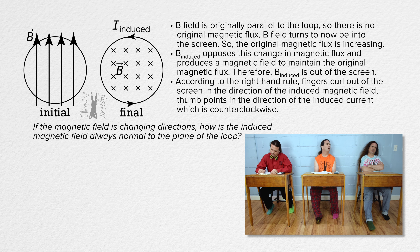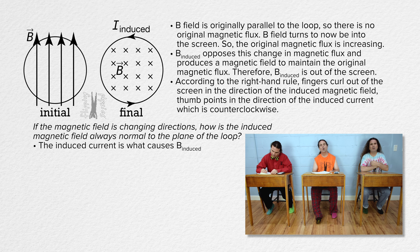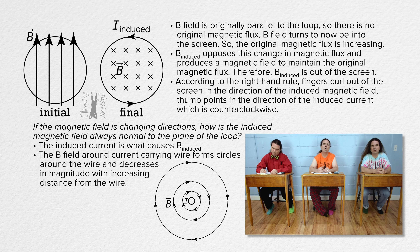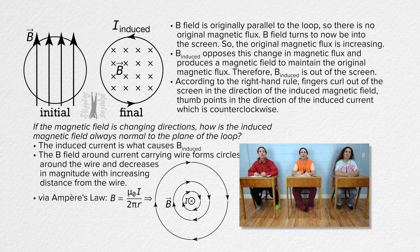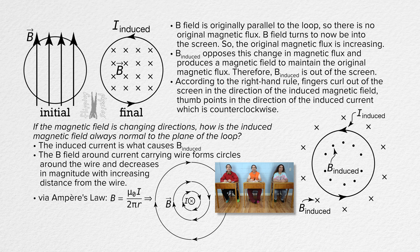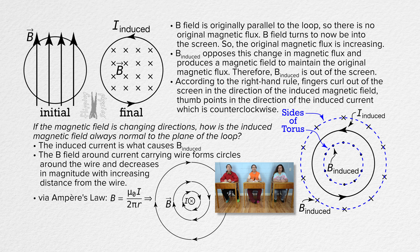If the magnetic field is changing directions, how is the induced magnetic field always normal to the plane of the loop? The induced current is what causes the induced magnetic field. In a previous lesson, we showed that the magnetic field around a current-carrying wire forms circles around the wire and decreases in magnitude as distance from the wire increases. We even used Ampere's law to derive the equation for the magnitude of the magnetic field around a current-carrying wire. The induced magnetic field is only normal to the plane of the loop in the plane of the loop. In locations outside the plane of the loop, the magnetic field is sort of in the shape of a torus — a donut. Yes, that is a great explanation.